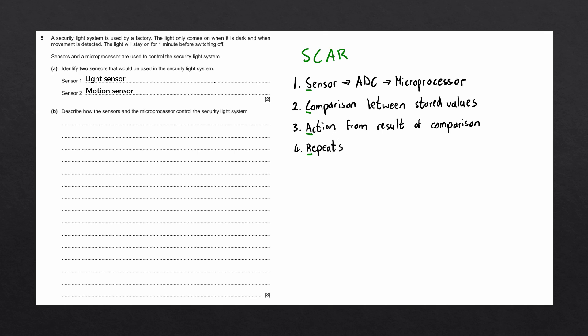To further understand this question, let's draw a diagram containing all of the components of the system. The first part of the system, we have two sensors, the light sensor and the motion sensor.